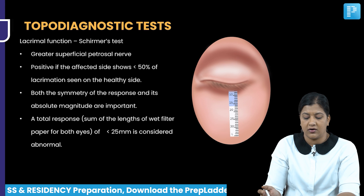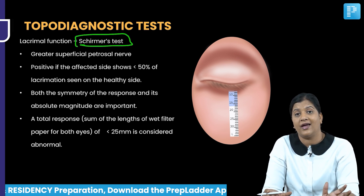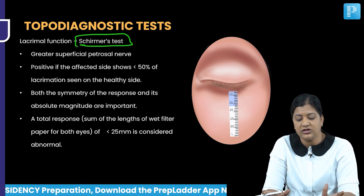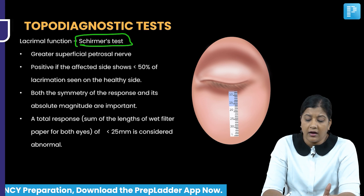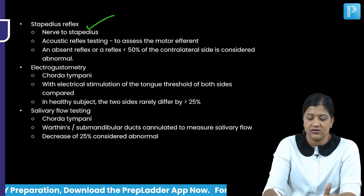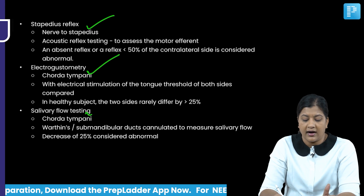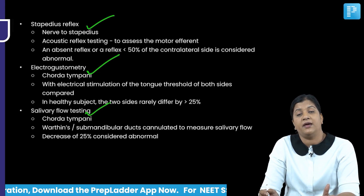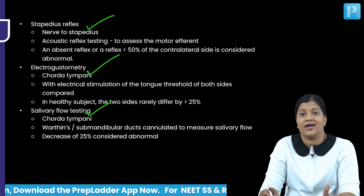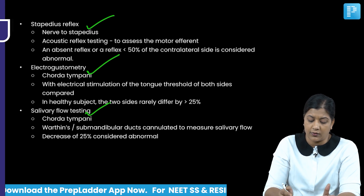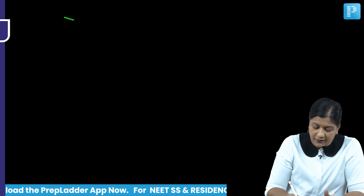To simplify, we perform what is called a topodiagnostic test, which helps identify exactly where the nerve has been damaged. The common tests include Schirmer's test, stapedial reflex test, taste assessment by electrogustometry, and salivary flow testing. Based on these tests we can localize the lesion of the facial nerve.